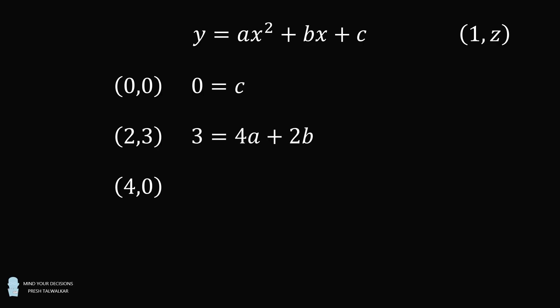We then substitute in the point (4,0). We simplify this equation: 0 is equal to 16a plus 4b. We now want to solve for a and b. So let's divide both sides of this equation by 2. We have 0 is equal to 8a plus 2b. From the last two equations, we subtract the second equation from the first equation. This eliminates the b variable.